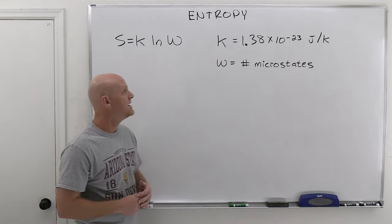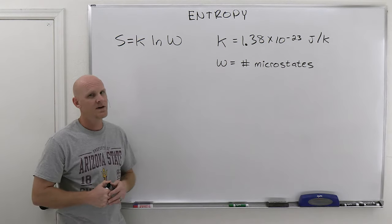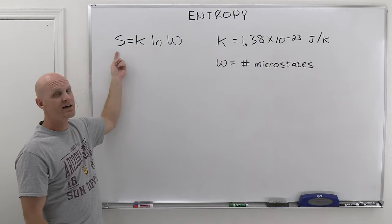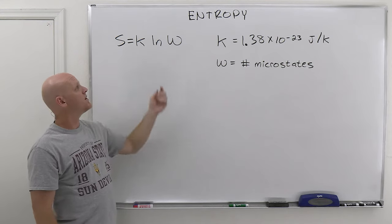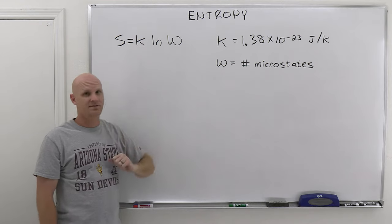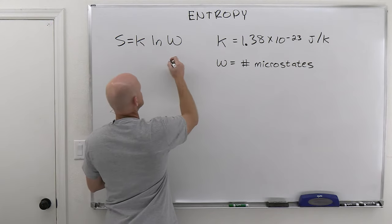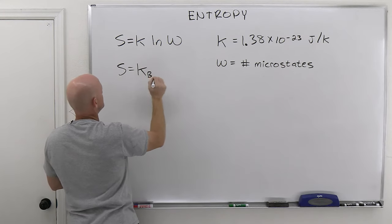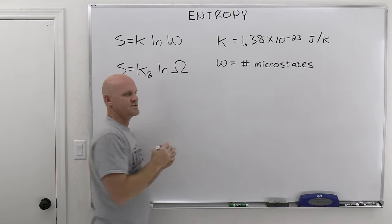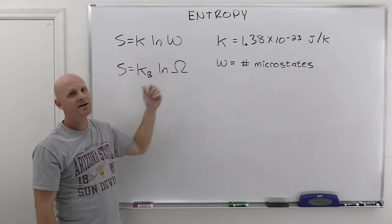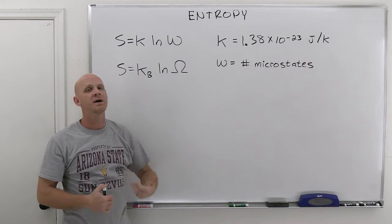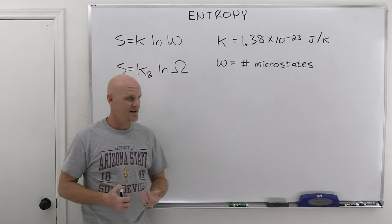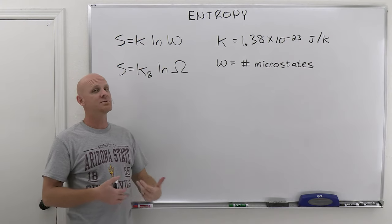Let's first talk about what entropy is. We're going to start with a way of looking at it from statistical mechanics. Entropy, abbreviated by the letter S, turns out to be related to what we call the number of microstates. Omega (or W) is sometimes used, so you might see this written as S = kB·ln(W) or S = kB·ln(Ω). W or omega stands for the number of microstates — the number of unique states that a system can exist in.